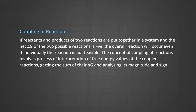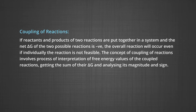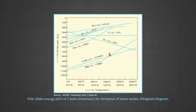A very interesting concept is coupling of reactions. If reactants and products of two reactions are put together in a system and the net ΔG of the two possible reactions is negative, the overall reaction will occur even if individually the reaction is not feasible. The concept of coupling of reactions involves interpretation of free energy values of the coupled reaction, getting the sum of their ΔG and analyzing the magnitude and sign. Such coupling is easily understood through Gibbs energy ΔG° versus T plots for the formation of the oxides, as shown in figure 1. The plots are called Ellingham diagrams.